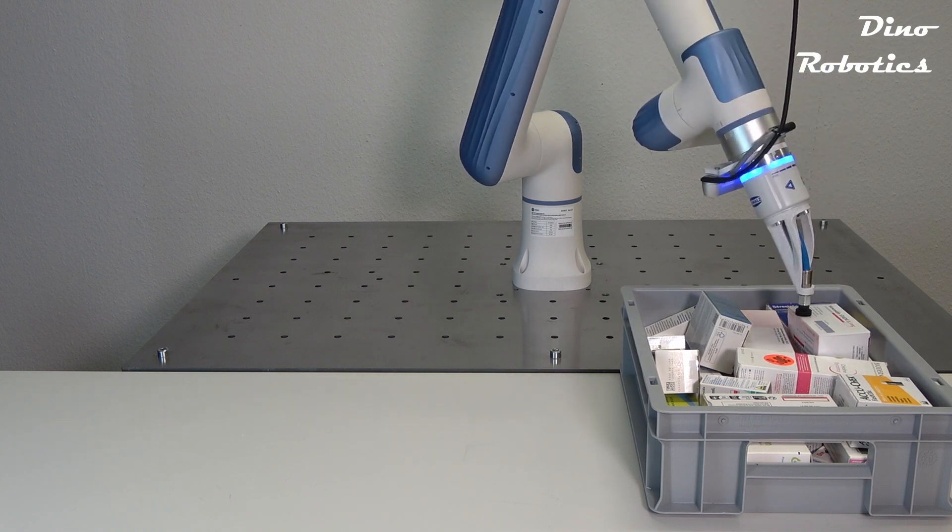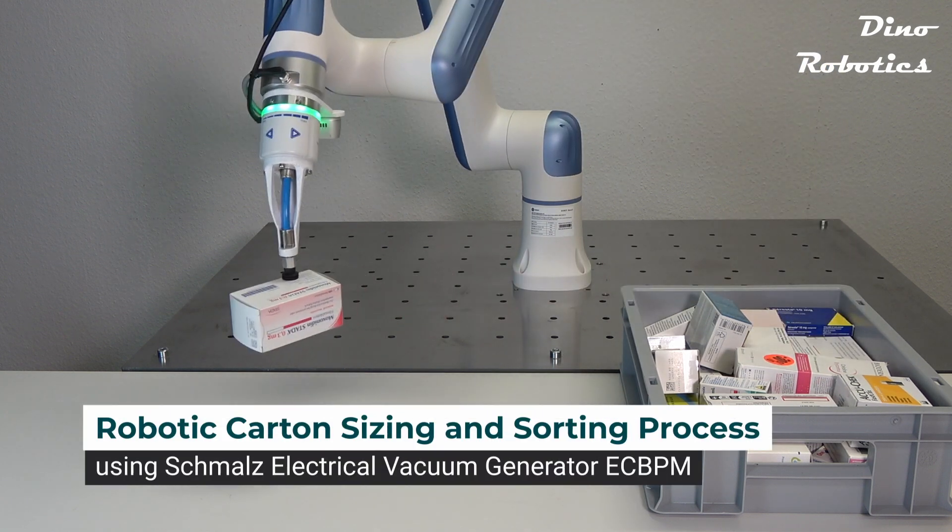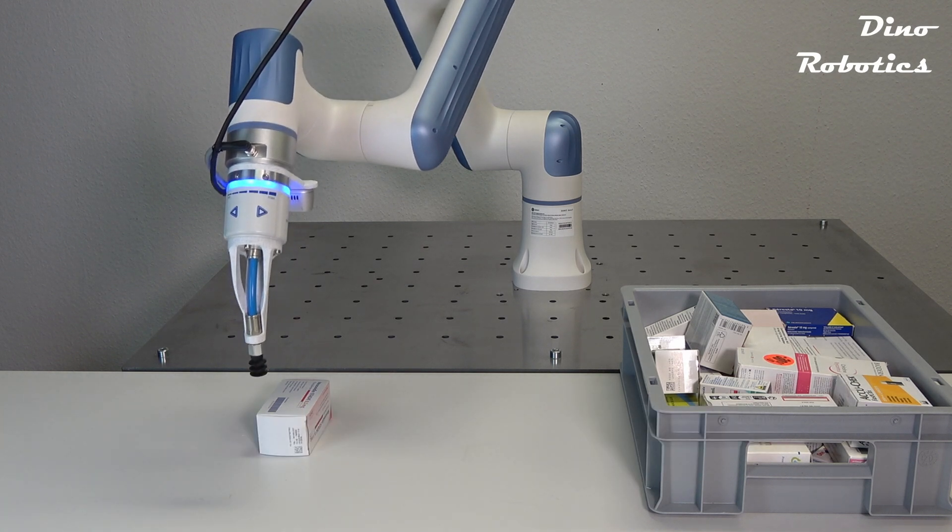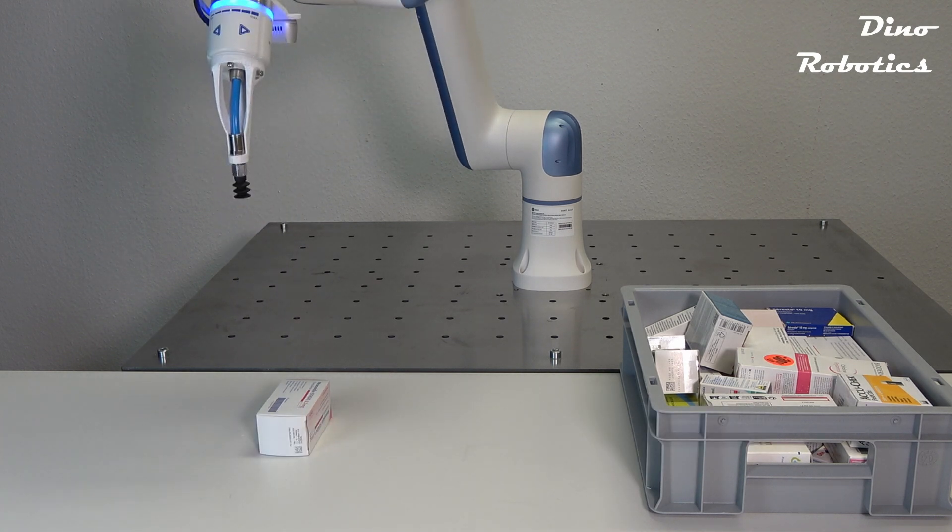In this video, we showcase the handling of cartons in a logistics or warehouse environment. The used robotic arm is the Dobot Nova 5. It is ultralight and easy to use.